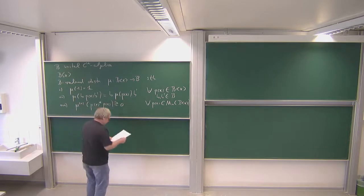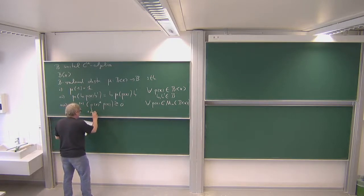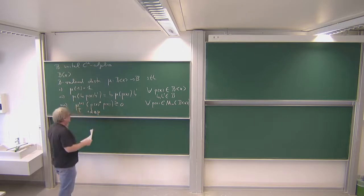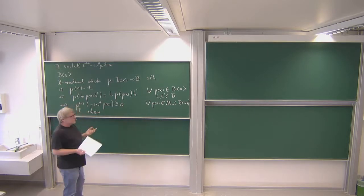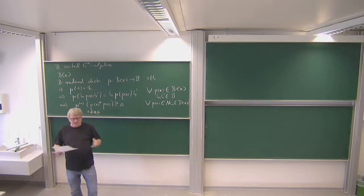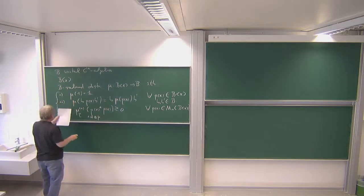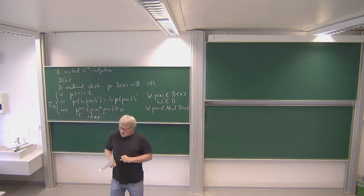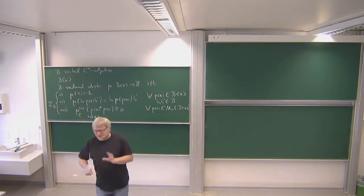Positivity in a C*-algebra — we know what this means. This is the amplification to the n×n matrices where I take the identity tensor μ. If I just require those three things, then this is more or less the analog of arbitrary probability measures in a classical setting. We gave a name to this: those three properties, if μ satisfies them, I denote these elements by Σ_B. This is somehow the analog of all probability measures.